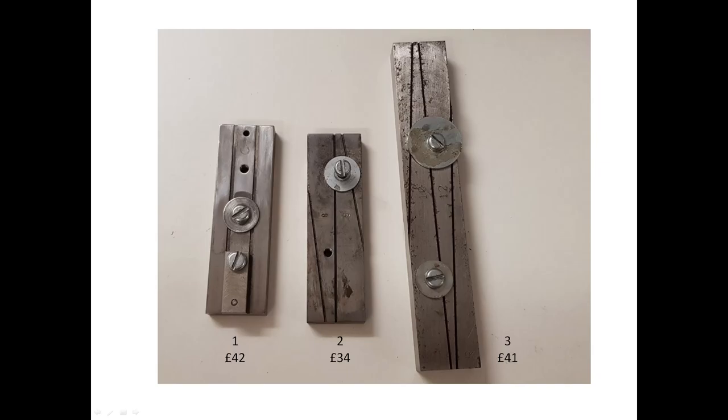The other two jigs are for producing common crossing Vs. The smaller one is for 1 in 5, 1 in 6, 1 in 7 and 1 in 8 crossings, and the larger is for 1 in 9, 1 in 10, 1 in 11 and 1 in 12 crossings. I added the second bolt and large washer.